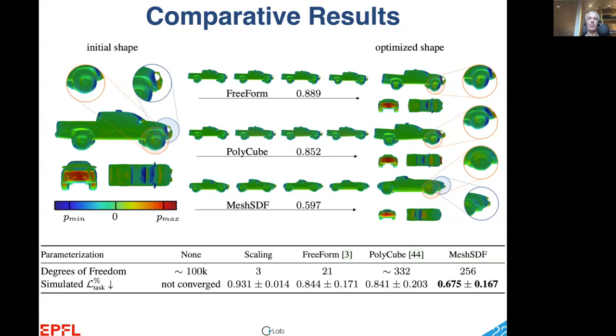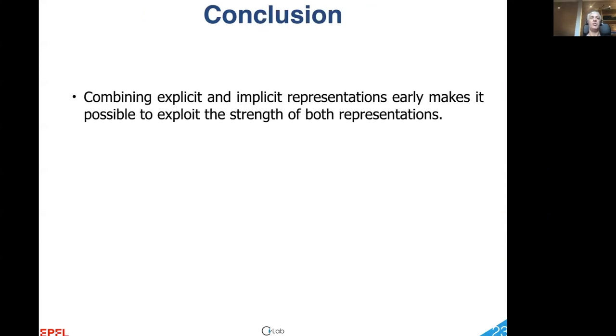Occasionally, it even changes the topology of the initial shape, for example, by removing useless spoilers. In short, we have shown two important results.